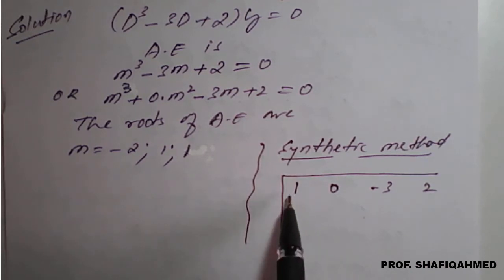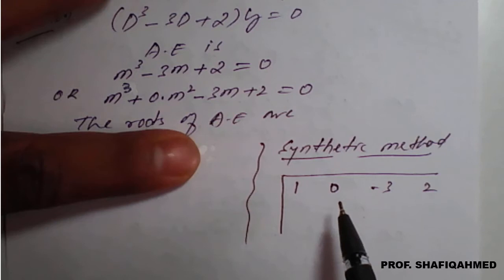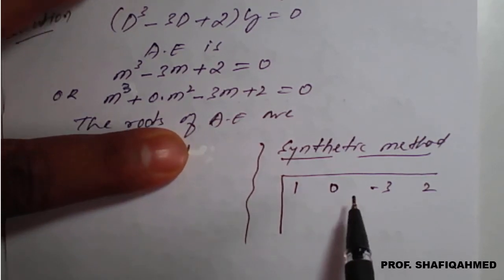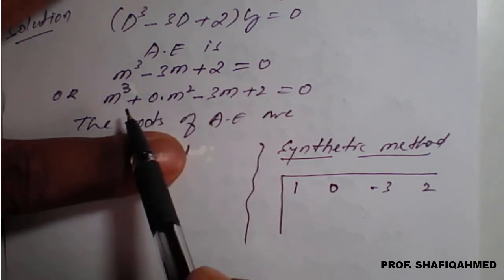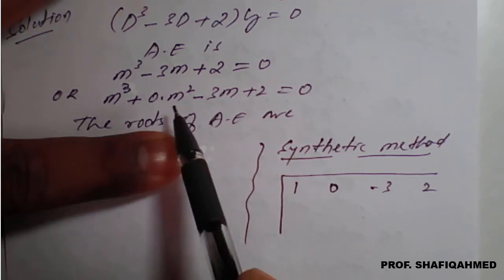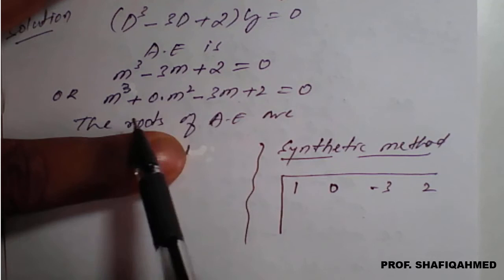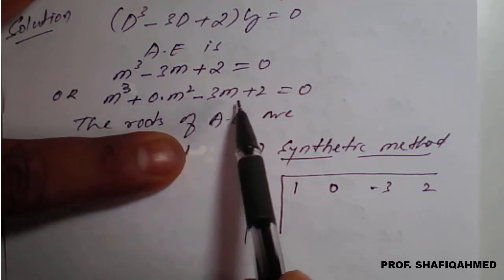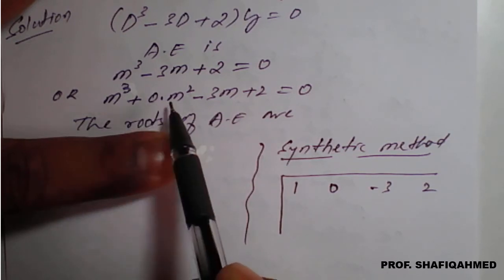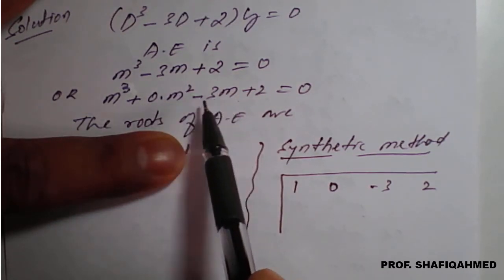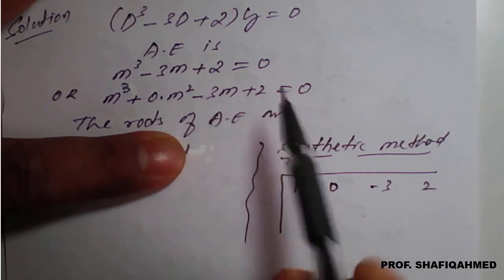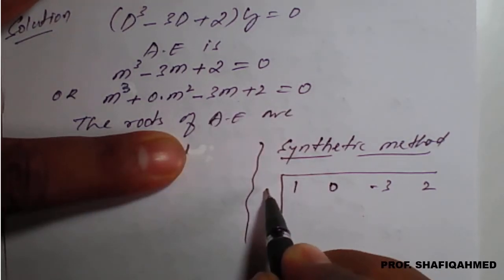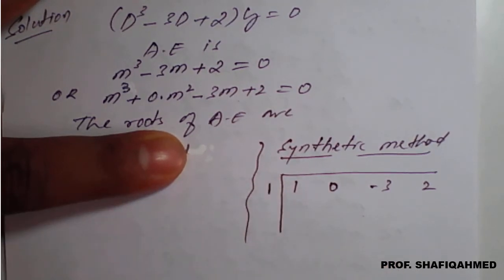Now we need to find a number that satisfies this equation. Try values: +1, -1, +2, -2, +3, -6, and so on. If we put m = 1: 1³ = 1, plus 0, minus 3×1 = -3, plus 2 gives 1 - 3 + 2 = 0. Since it equals 0, m = 1 satisfies the equation, so we take 1 as our root for synthetic division.